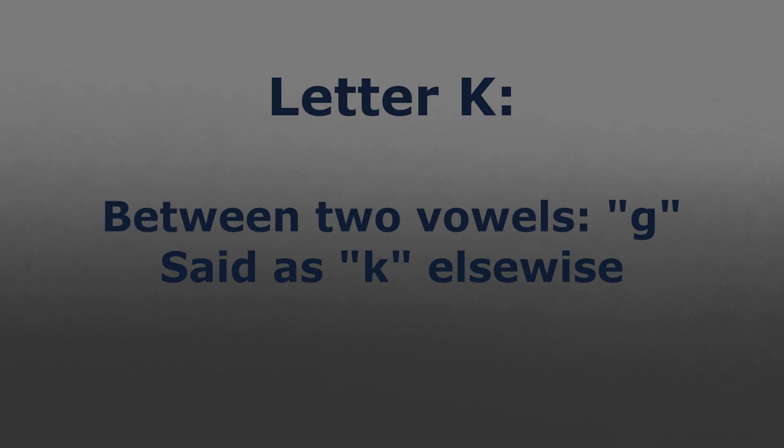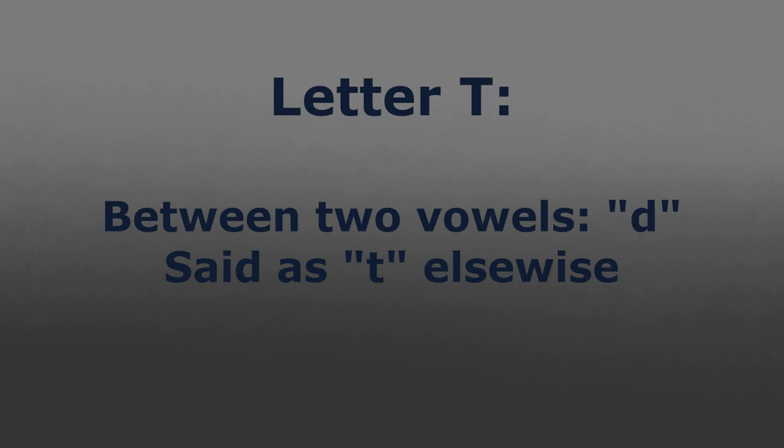Vowels always use vibrating vocal cords, or voicing, to make the sound. So when K is in between two voiced sounds, it will become the voiced G. Otherwise, K represents a K sound. What happens with K also happens with P, this time between P and B. One is voiced, B, and the other is not, P. As such, the same rule applies: when P is in between two vowels, it will become B. The last letter to behave like this is T, which will become D between two vowels and T elsewhere.